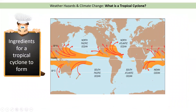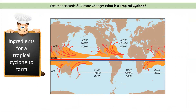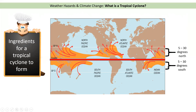So what ingredients do we need for a tropical cyclone to form? The first thing is it needs to be near the equator but not on the equator itself. If we think about a country on the equator like Singapore, Singapore has in fact only had one tropical cyclone ever. They do form approximately 5 to 30 degrees north of the equator and 5 to 30 degrees south of the equator. At 50 degrees north it's too far away and not warm enough.